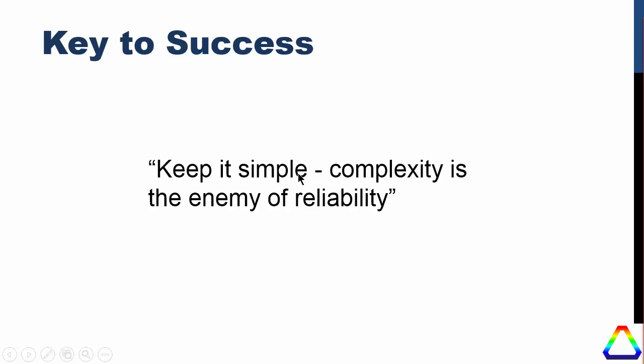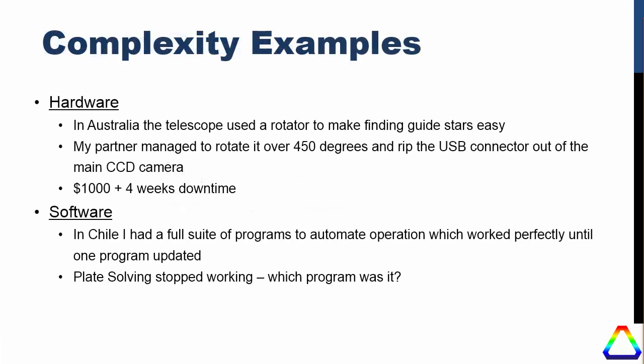An overall general rule for success in remote observing is to keep it as simple as possible. Some people try to have three or four scopes going simultaneously with multiple cameras, but that kind of complexity can really be the enemy of reliability. You can do sophisticated work with sophisticated tools, but the key is to have a system that is very reliable and simple to operate. For example, in Australia the telescope used a rotator to find guide stars — my partner managed to rotate it over 450 degrees, ripping the USB connector out of the main CCD camera, costing a thousand dollars and four weeks of downtime.